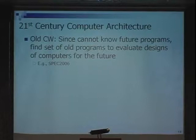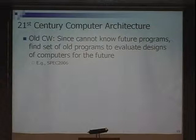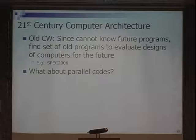What have computer architects always done in the past? Basically said: who knows what programs are going to be important in the future? You can't know that. So what we do is take a set of old programs and evaluate them for the future — SPEC is an example of that. That's fine if we're still doing uniprocessors. But where are we going to get parallel codes to design the computers of the future, since the codes aren't parallel? We're stuck.